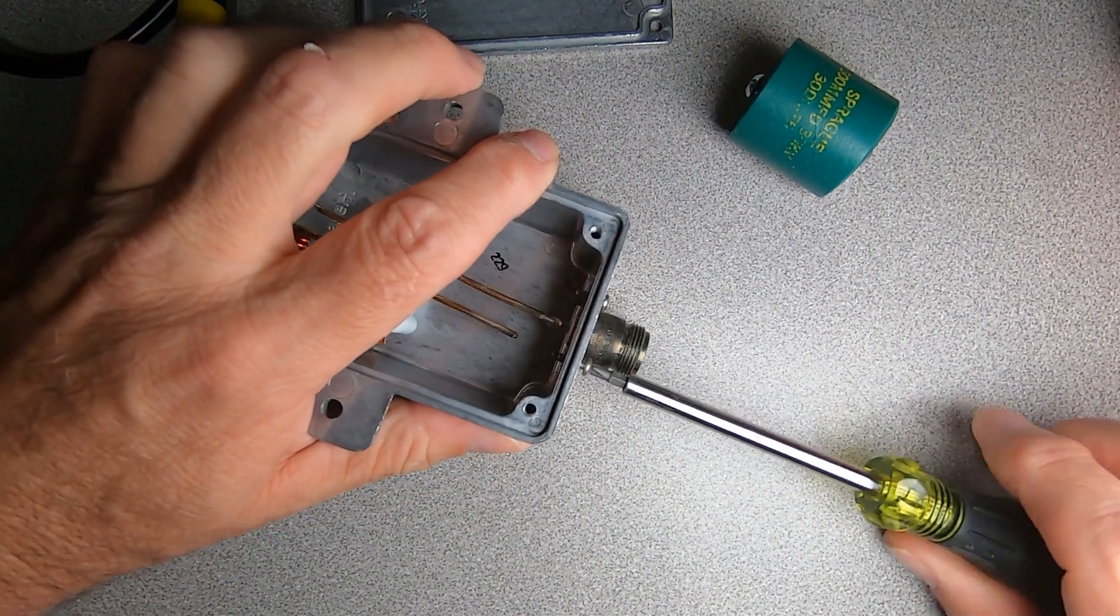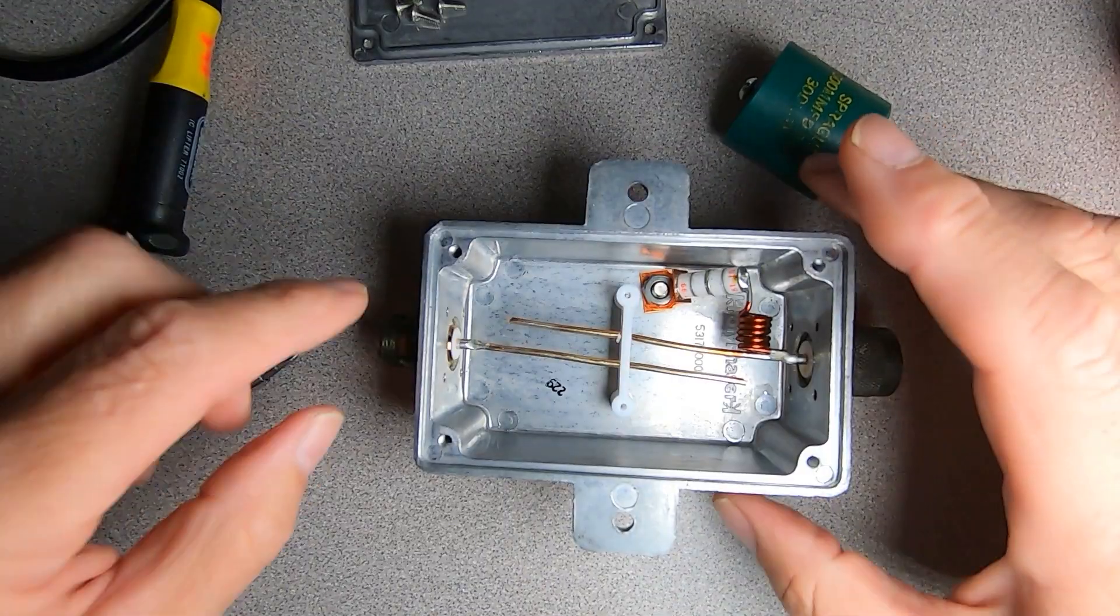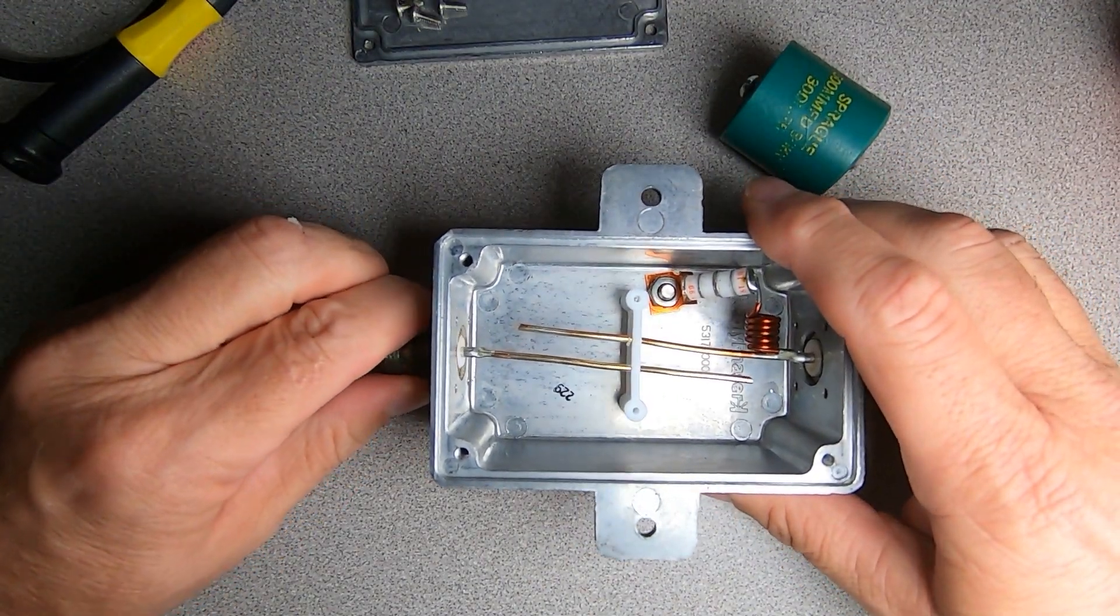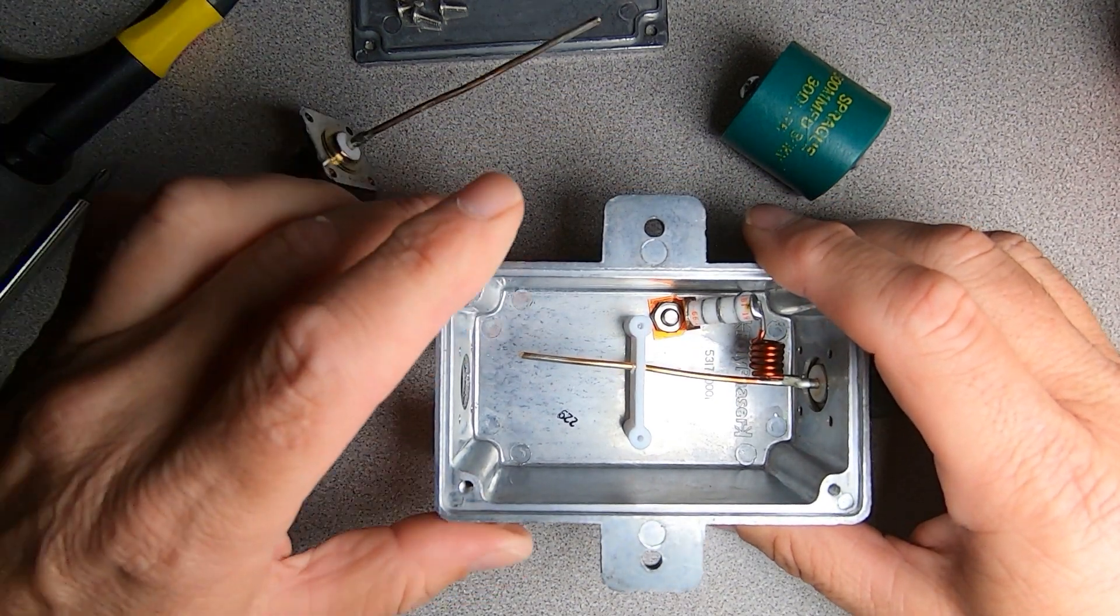So let's go ahead and remove our screws from our existing RF connectors here. You can see once we've removed our screws it's pretty easy just to go ahead and remove our RF connectors.